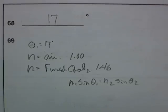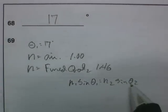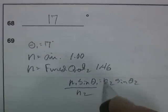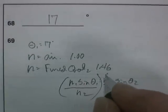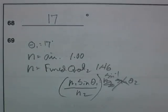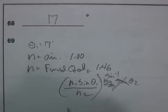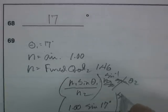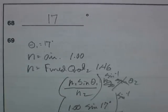Well, let's do algebra first. I'm looking for sin θ2, so I divide both sides of the equation by n2, then I take the inverse sine of this side and that'll give me θ2. So I write 1 times the sine of 17 degrees divided by 1.46.